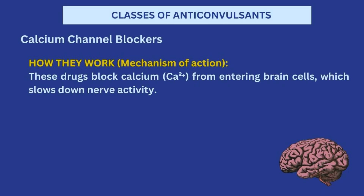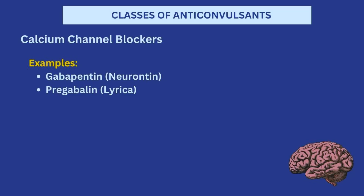The next class of medications that can be used as anti-convulsants are the calcium channel blockers. If you're familiar with my previous pharmacology videos, I mentioned calcium channel blockers when talking about anti-hypertensives. They also come into play as anti-convulsants — just like sodium channel blockers, this class specifically blocks calcium from gaining access to the brain cells to reduce or prevent hyperactivity. A very common example is gabapentin.